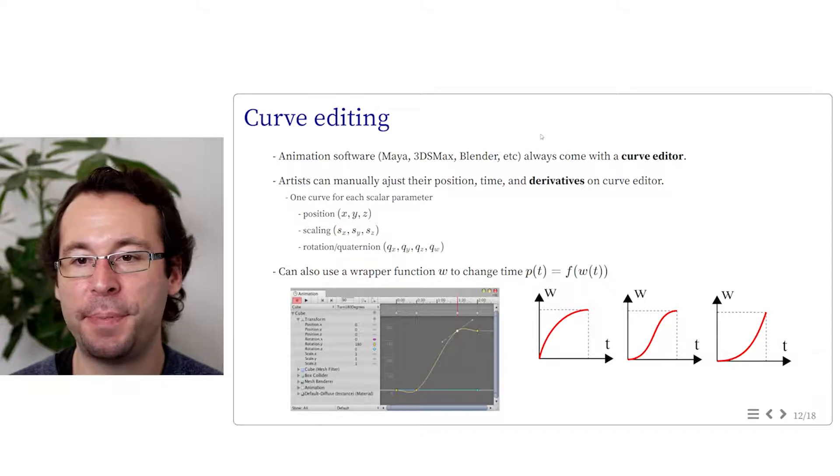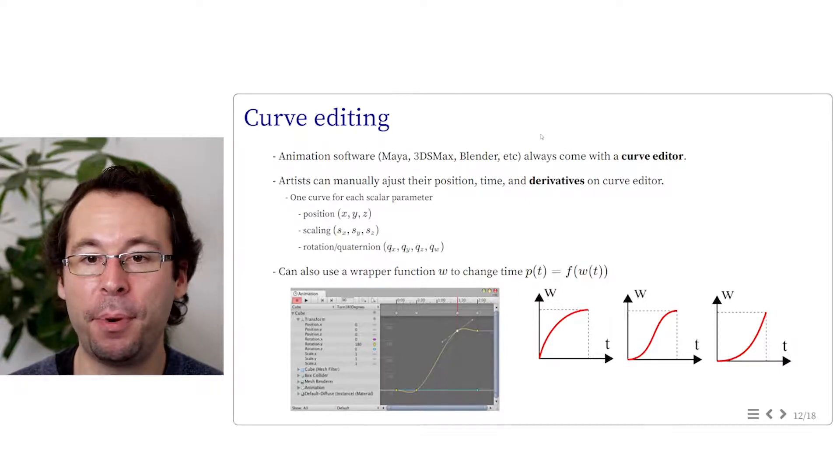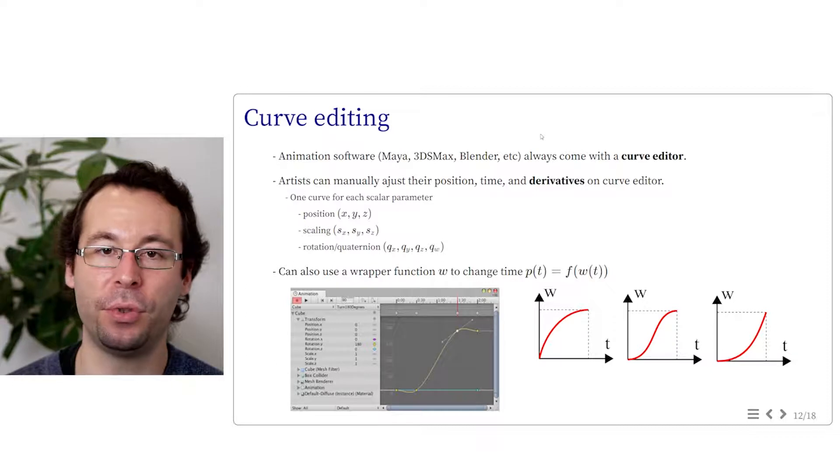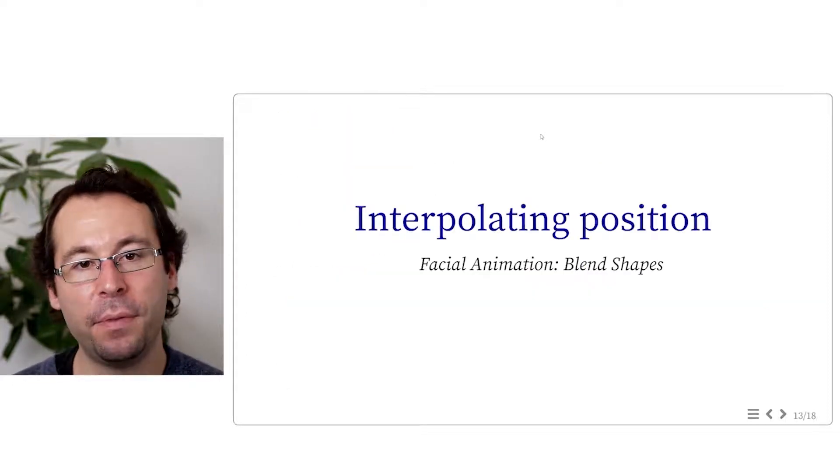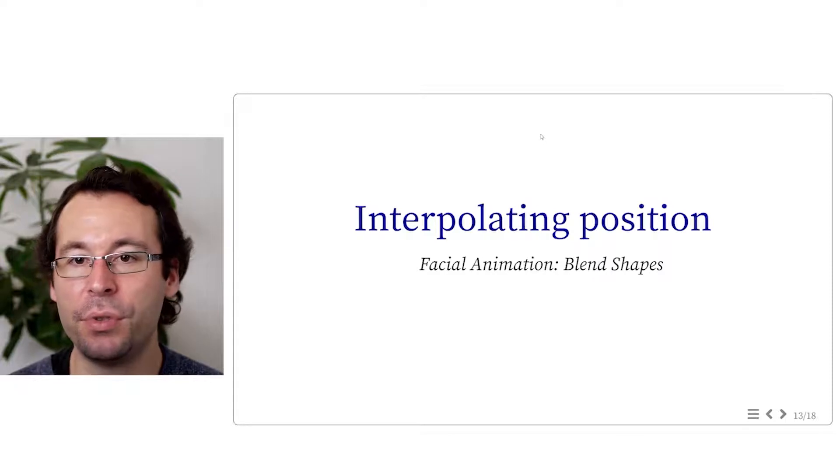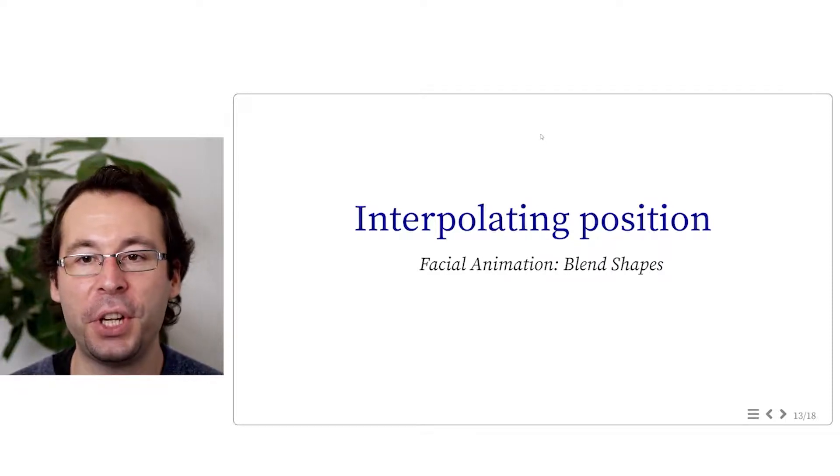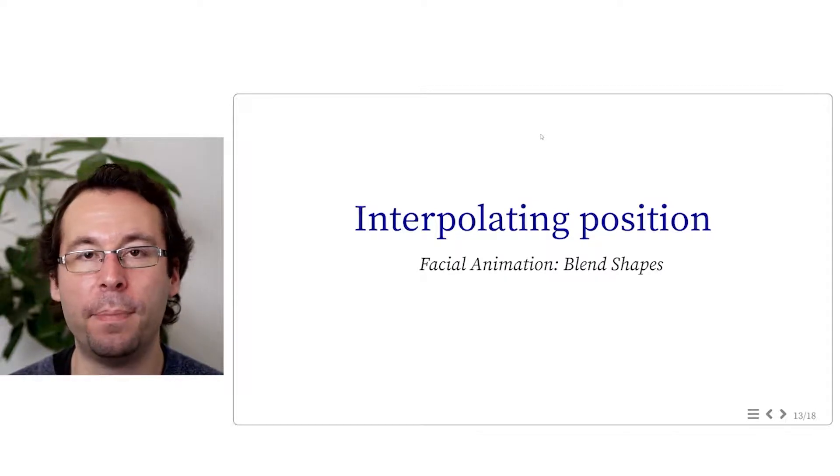If the user wants to set a specific profile of acceleration or deceleration between samples, he can also apply a wrapper function that will apply basic trajectory profiles to the curve. And now, in this next part, we are going to see some details about the use of position interpolation for facial animation, and in particular with the use of the so-called blend shapes.